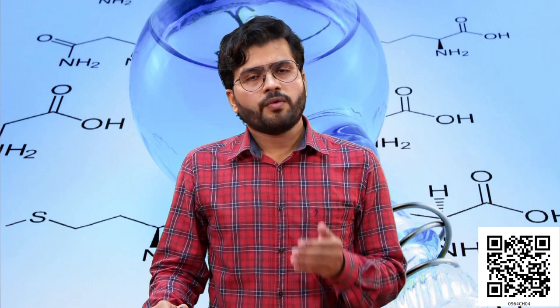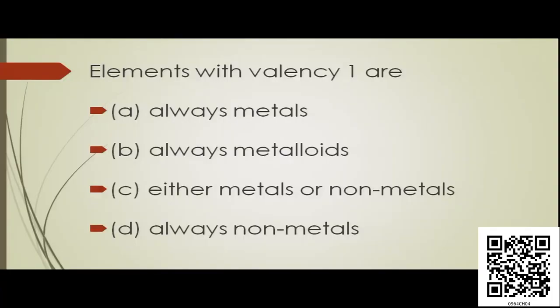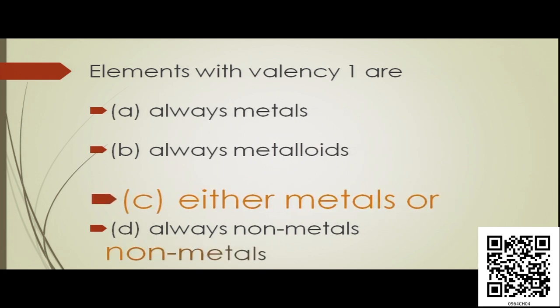We will take another example from this topic. Elements with valency 1 are of what? Whether it is a metal, whether it is a metalloid, whether it is a non-metal, or can it be either a metal or a non-metal, or is it always a non-metal? If you recall, in case of a metal like sodium, it has valency 1. And in case of non-metals like chlorine, their valency is also 1. So the answer will be: it can either be a metal or it can be a non-metal. So option C is the correct answer.